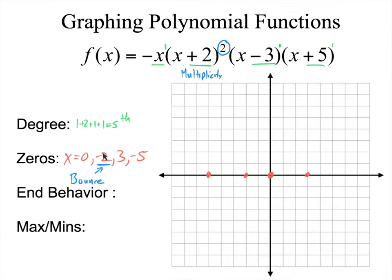So we've got our zeros and degree. End behavior is based on the leading coefficient and degree. It's negative and fifth degree, which is odd. So I have a negative odd-degree function. Negative means it's going down on the right. Odd means they go opposite directions.